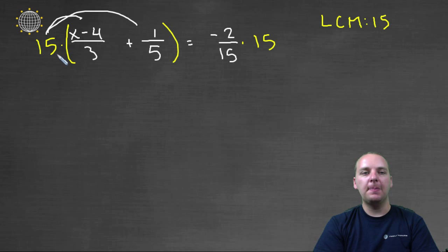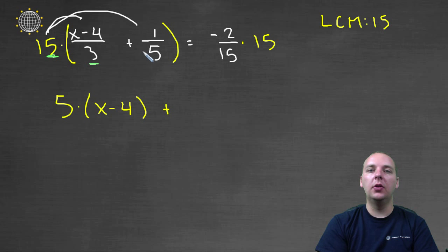So we have fifteen times x minus four divided by three. Now the fifteen divided by three part, that will give you five. So we'll have five times the quantity x minus four, and then plus, when we distribute the fifteen to the one-fifth, fifteen divided by five will be three.